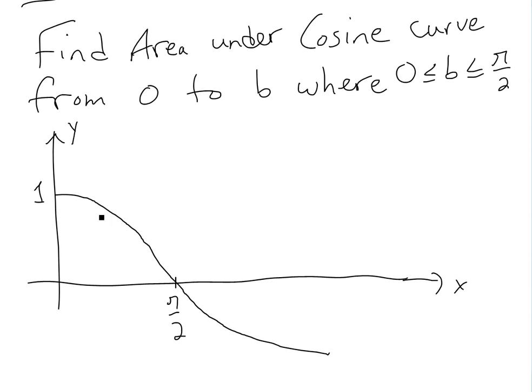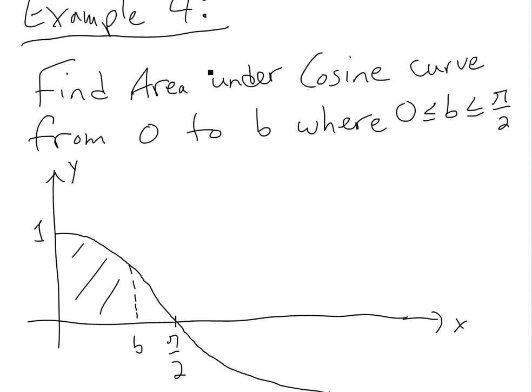We want to know this area where b is in between somewhere. So applying the integration methods we've learned, the area is from 0 to b of cosine x dx.